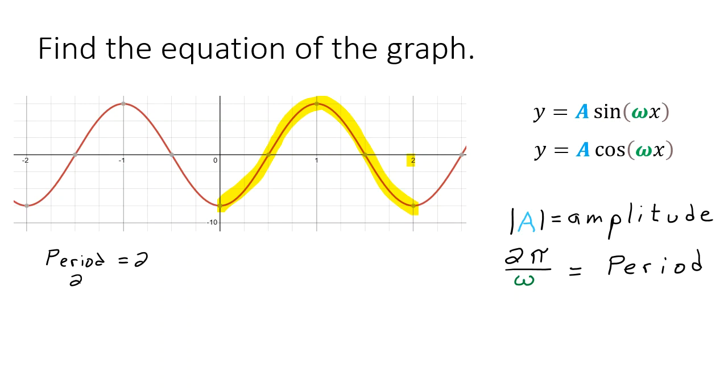So I know that the period is 2. So that means that 2 pi divided by omega is equal to 2. Okay so if I multiply both sides by omega and divide by 2 I get 2 pi over 2. So omega is pi. So that's going to go in our equation.